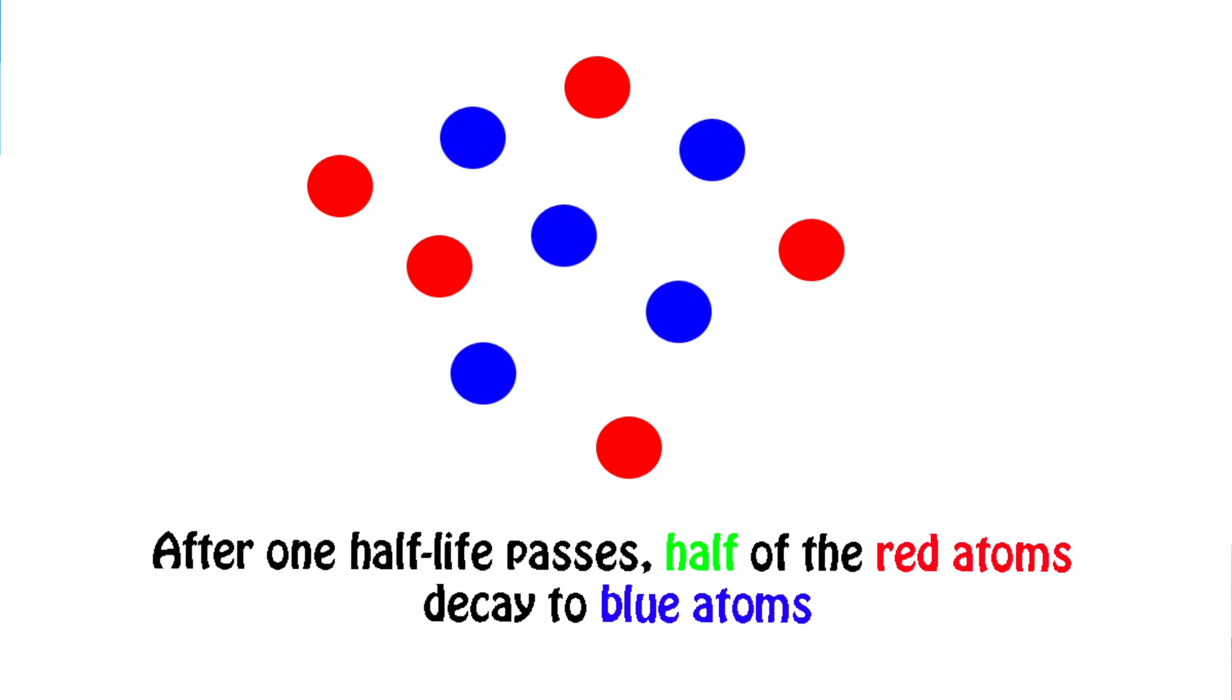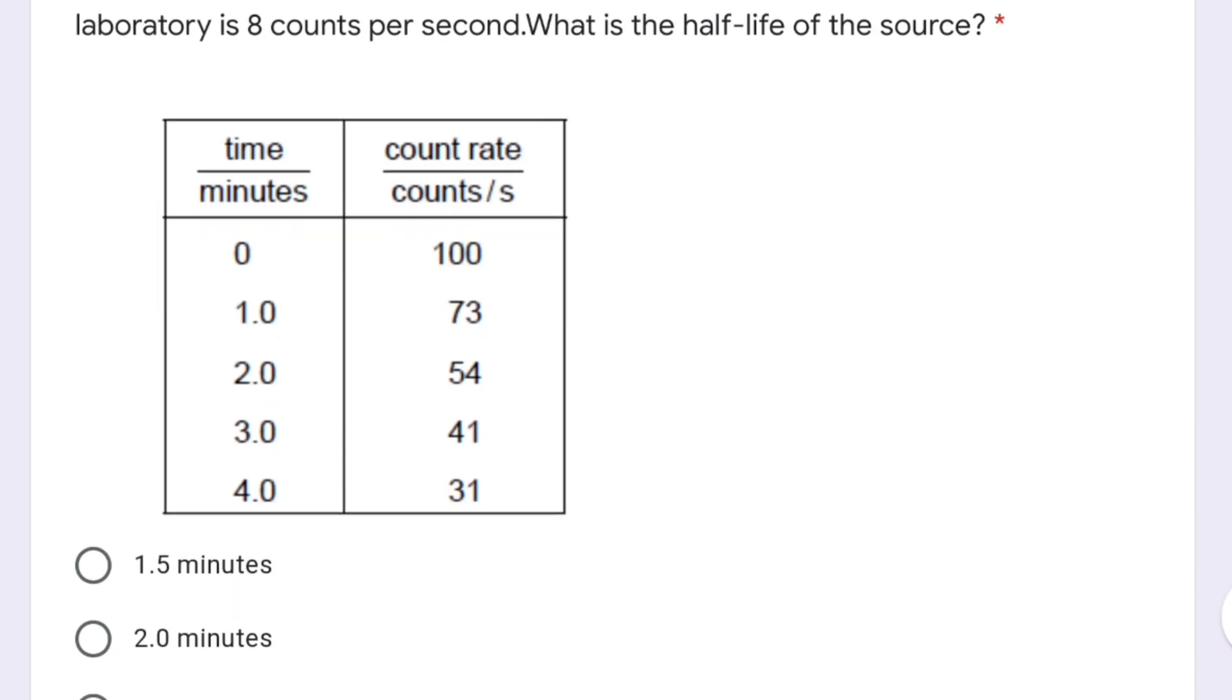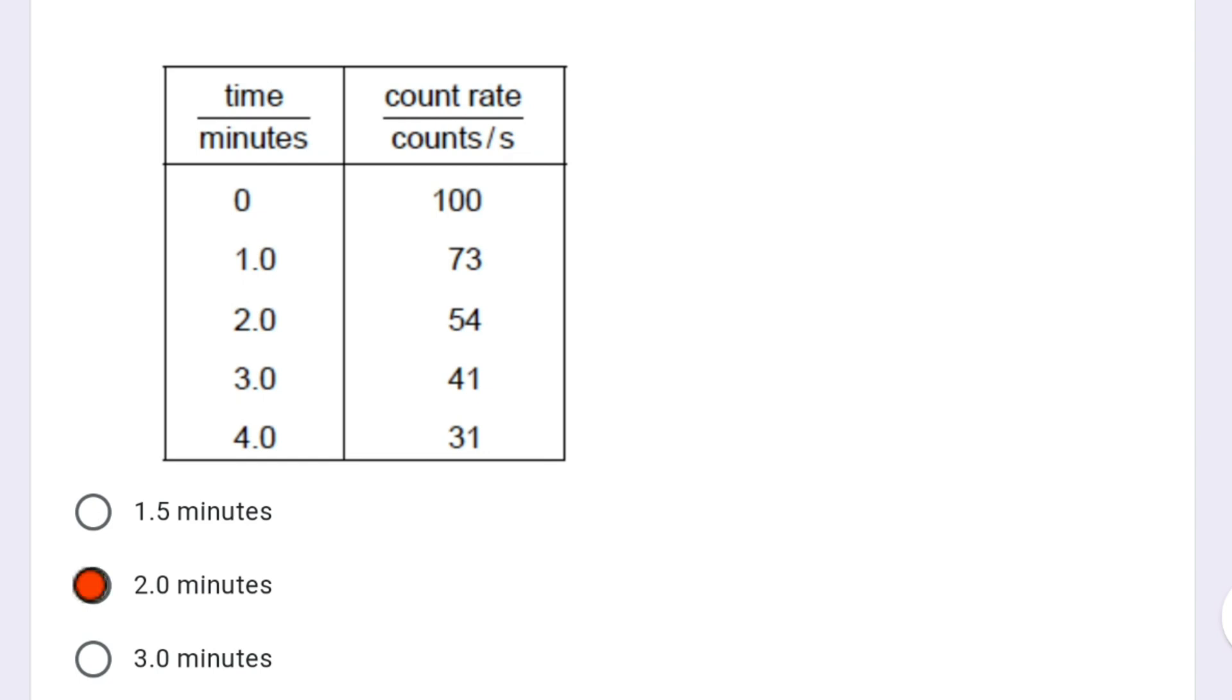Now look at the question. In this table, time is given in minutes and count rate is given. We have to see what is the half-life of the source. In the beginning, it is 100 counts per second, and in 2 minutes, that 100 becomes 54. So the correct answer is 2 minutes, because in 2 minutes the 100 becomes approximately 54.